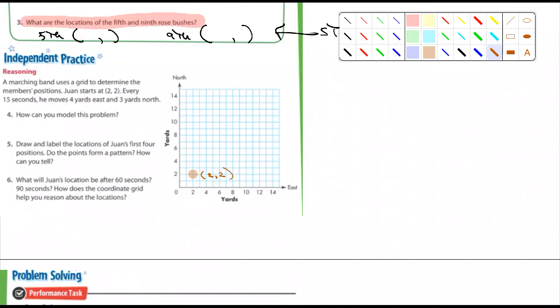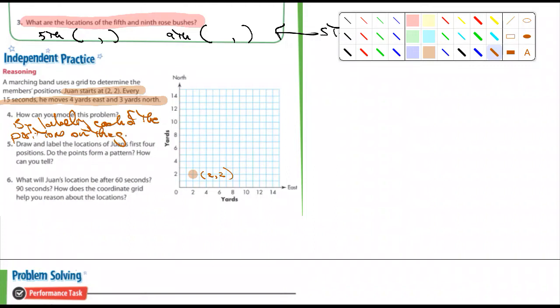And then, it says, every 15 seconds, he moves 4 yards east and 3 yards north. Well, again, here's east and here's north. And so, for the next 15 seconds, he goes east, 4, and north, 3. And then, it asks you the question, how can you model this problem? How can you model it? By labeling each of the positions on the grid. There you go. By labeling each of the positions on the grid.